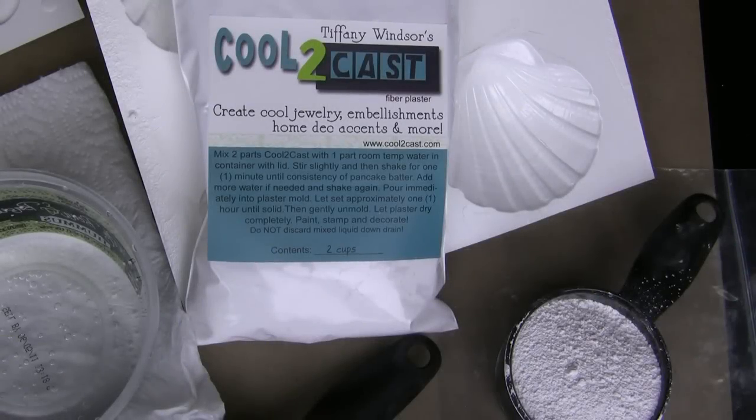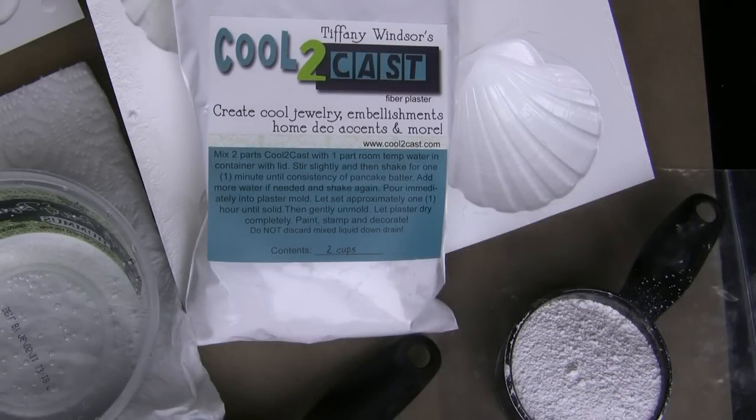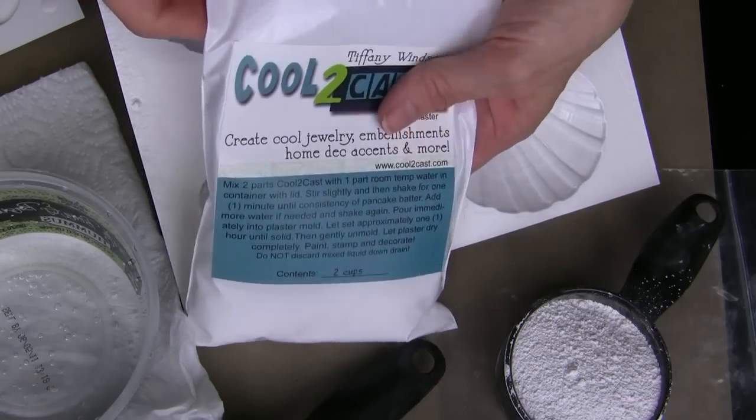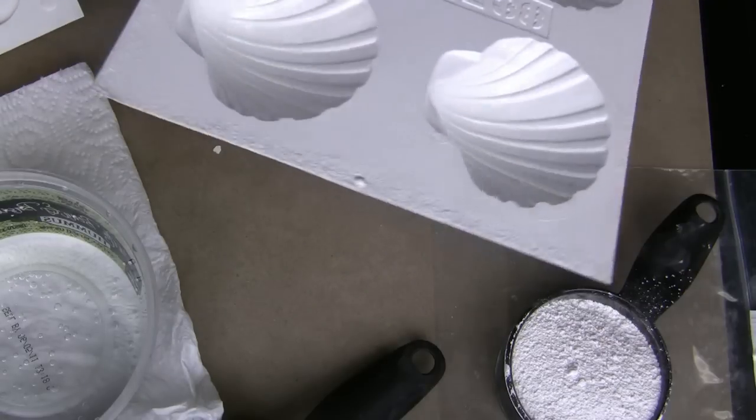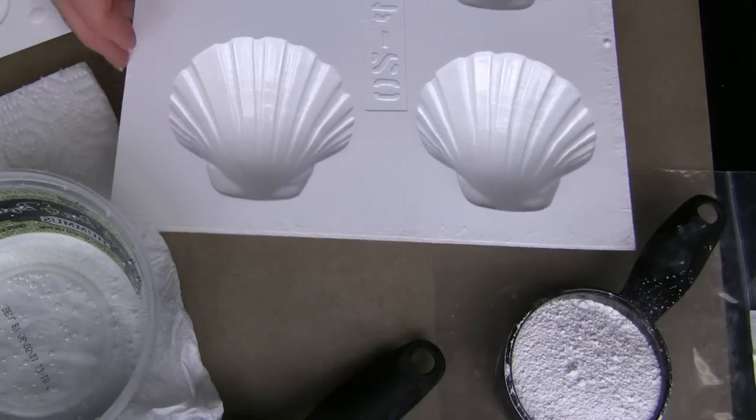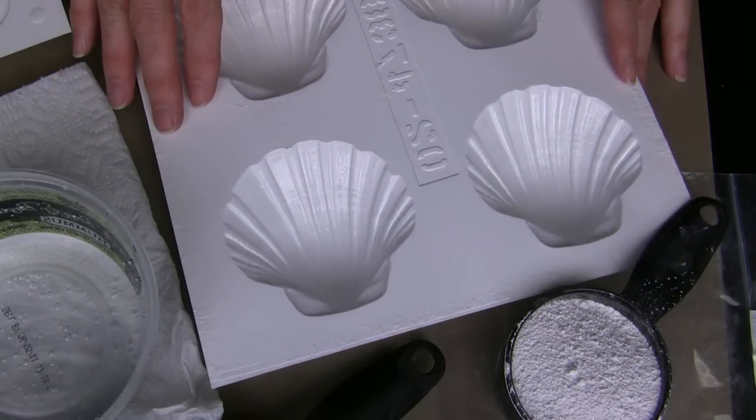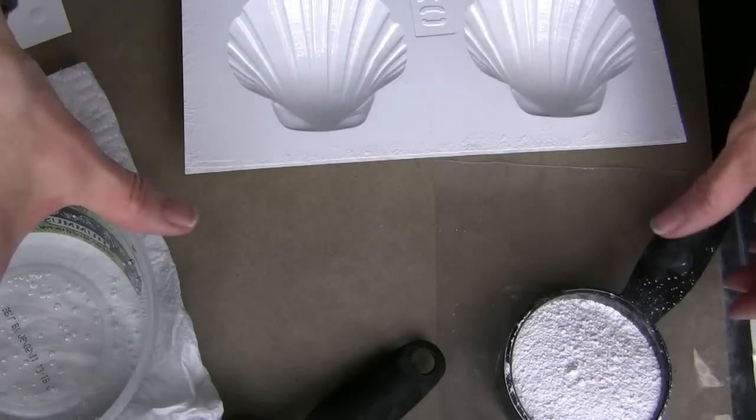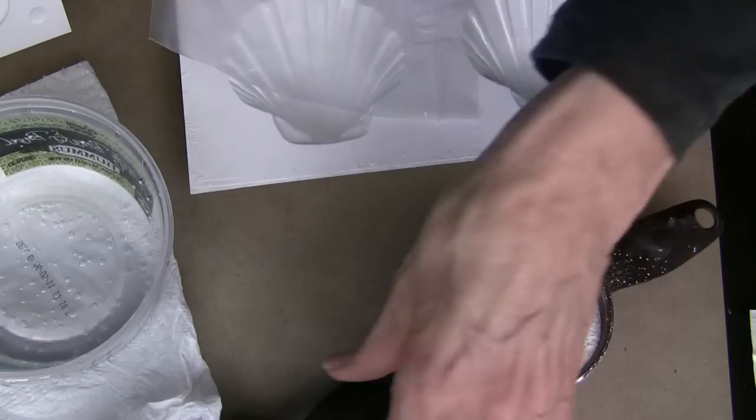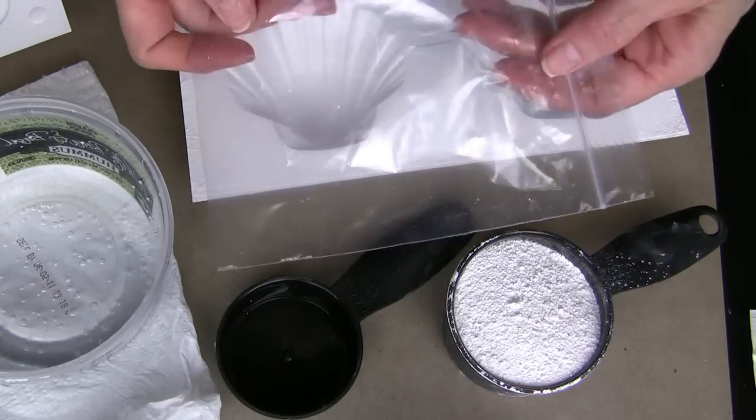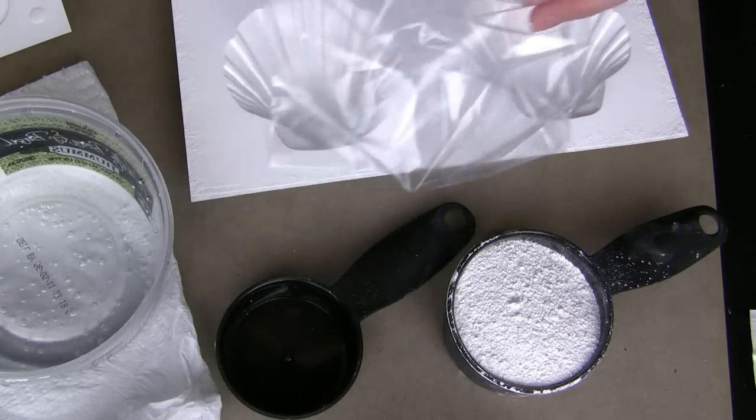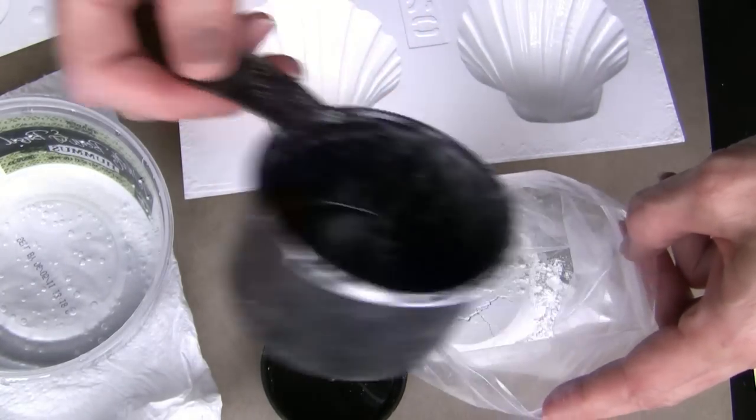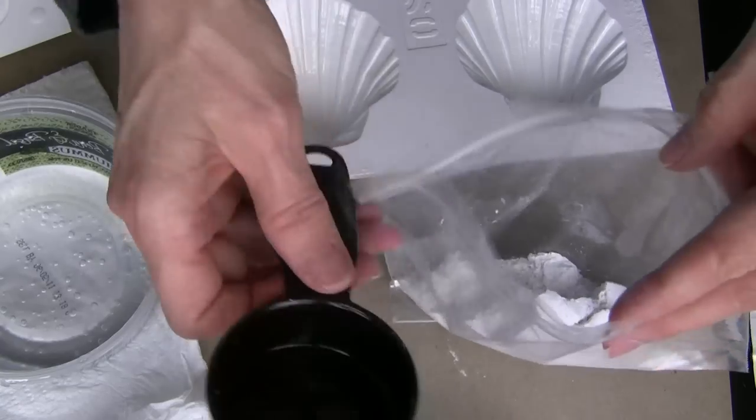Here are the supplies that you will need to create the cool to cast shells. Here is the package of cool to cast and a mold. You can use a resin mold, plaster mold, candy mold, any type of mold that has the design that you would like. I have water and a couple of measuring cups and a plastic bag. Now this technique for mixing is what my sister Heidi prefers. I also like to use a plastic container with a lid, but this is really easy.